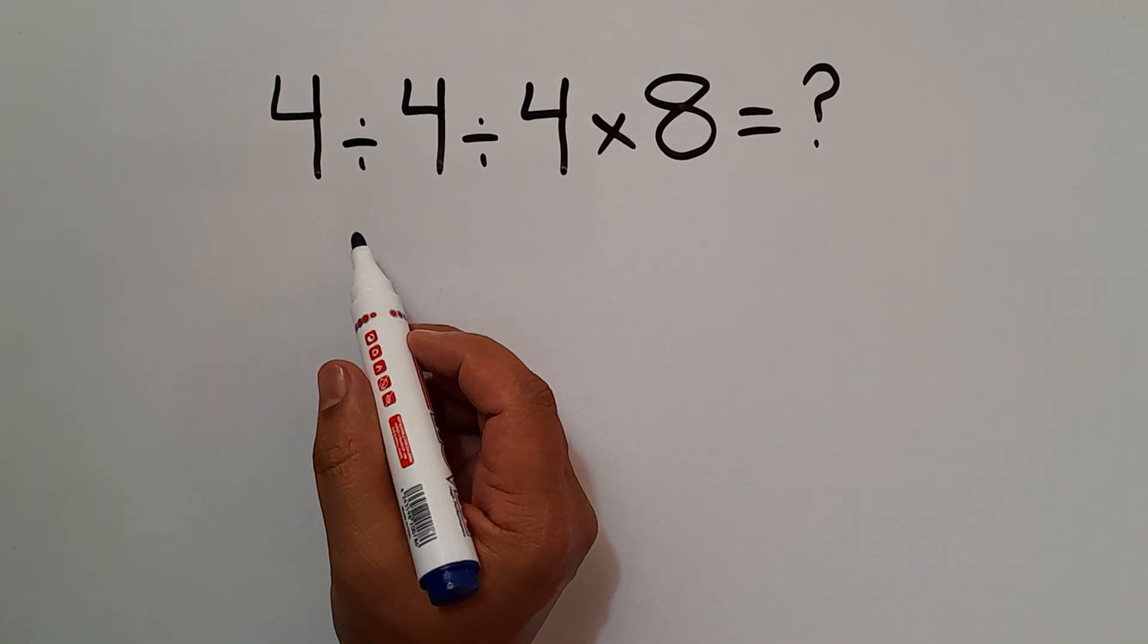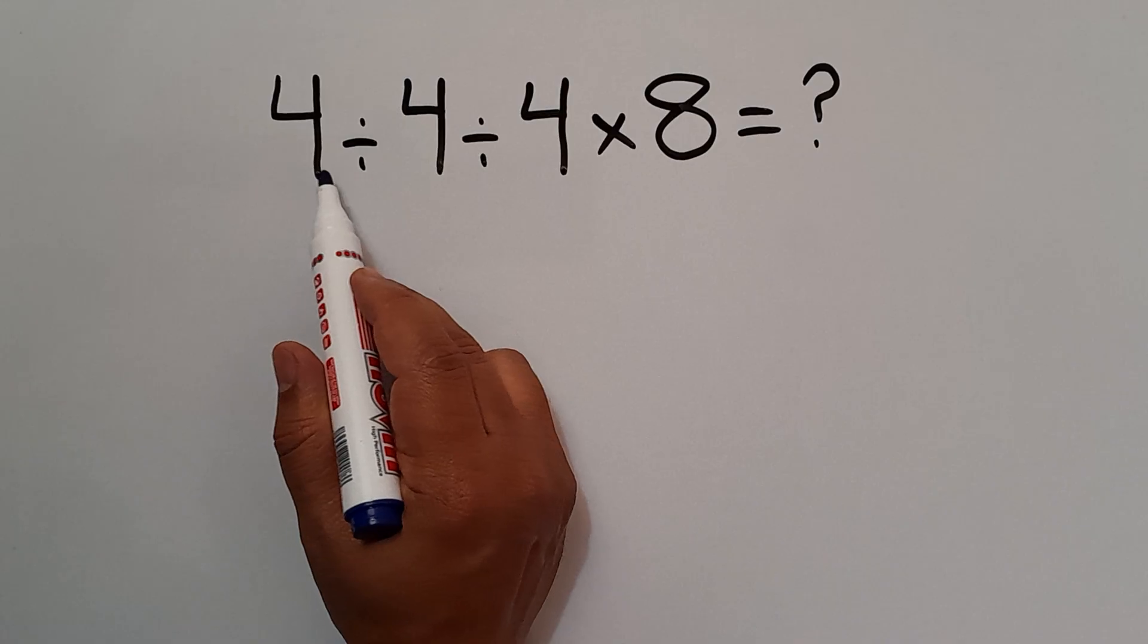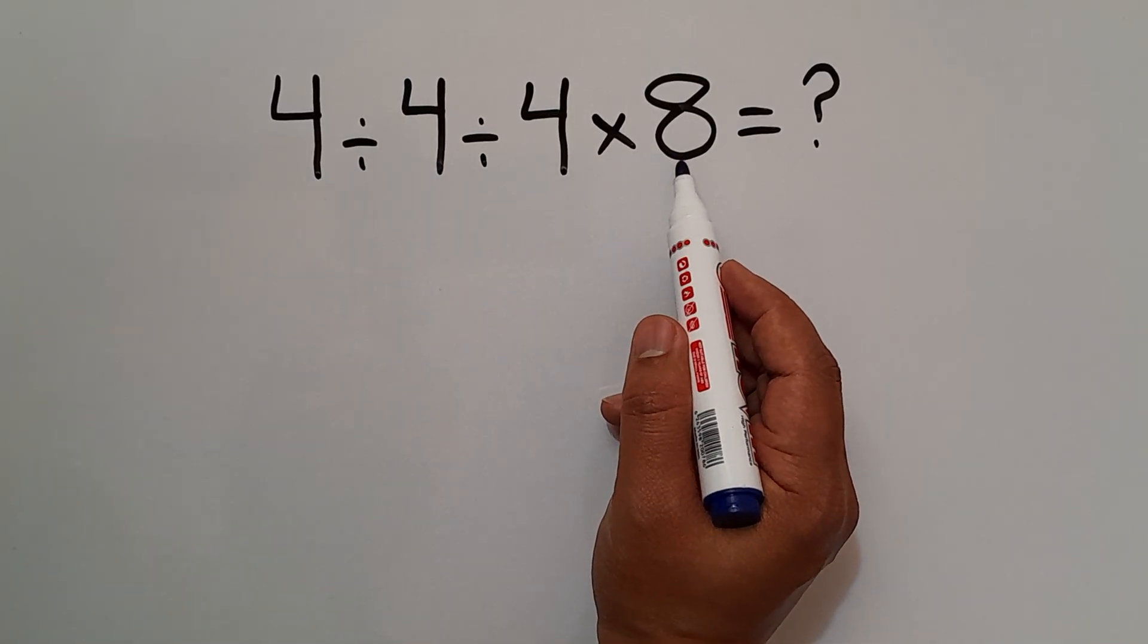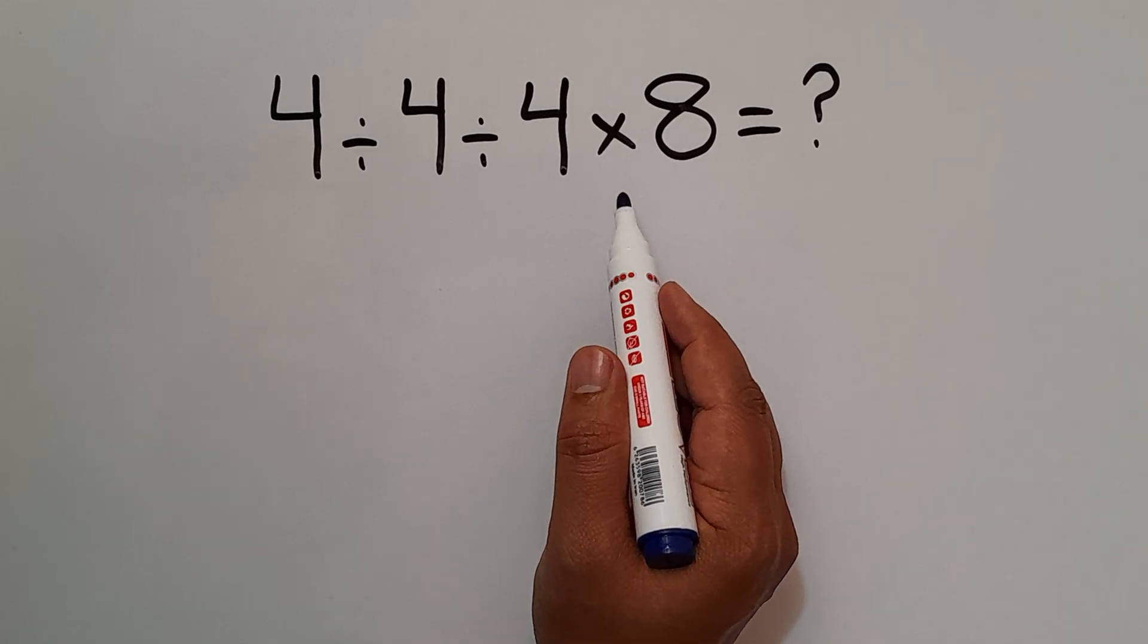Hey guys, welcome to MathJoy. In this video we want to find the value of this expression: 4 divided by 4 divided by 4 then times 8. Are you ready to solve? Let's go. To start, according to the order of operations...